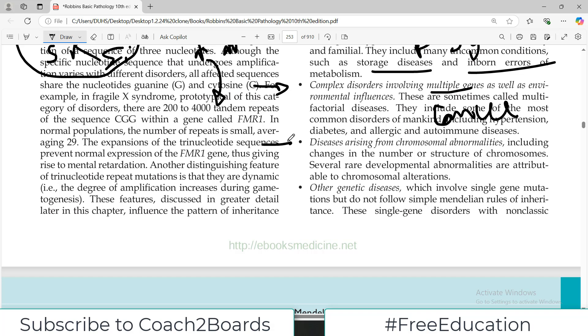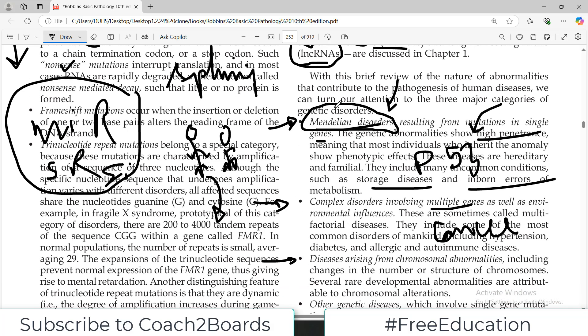Then there is another category which is called diseases arising from chromosomal abnormalities. Now these are diseases where there are gross chromosomal issues. Mendelian disorders are usually single gene disorders, a gene is involved.